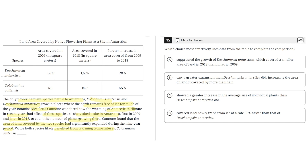Looking at this graph, the two species are listed here, along with the area covered in 2009, the area covered in 2018, and the percent increase. Looking at percent increase, Descampsia had a 28% increase, and Columbanthus had a 55% increase.